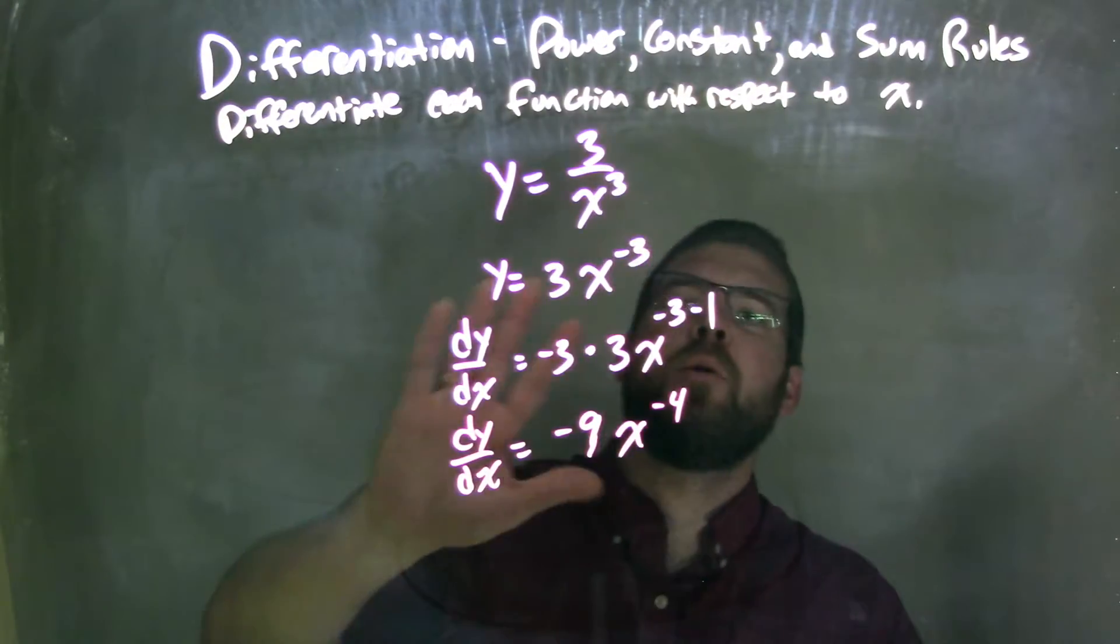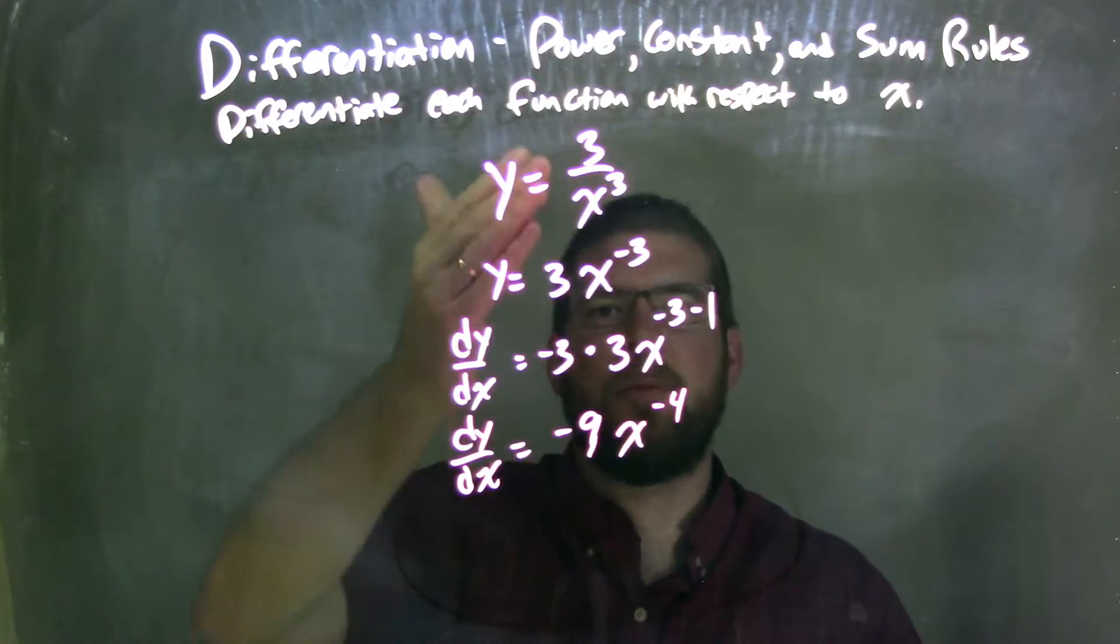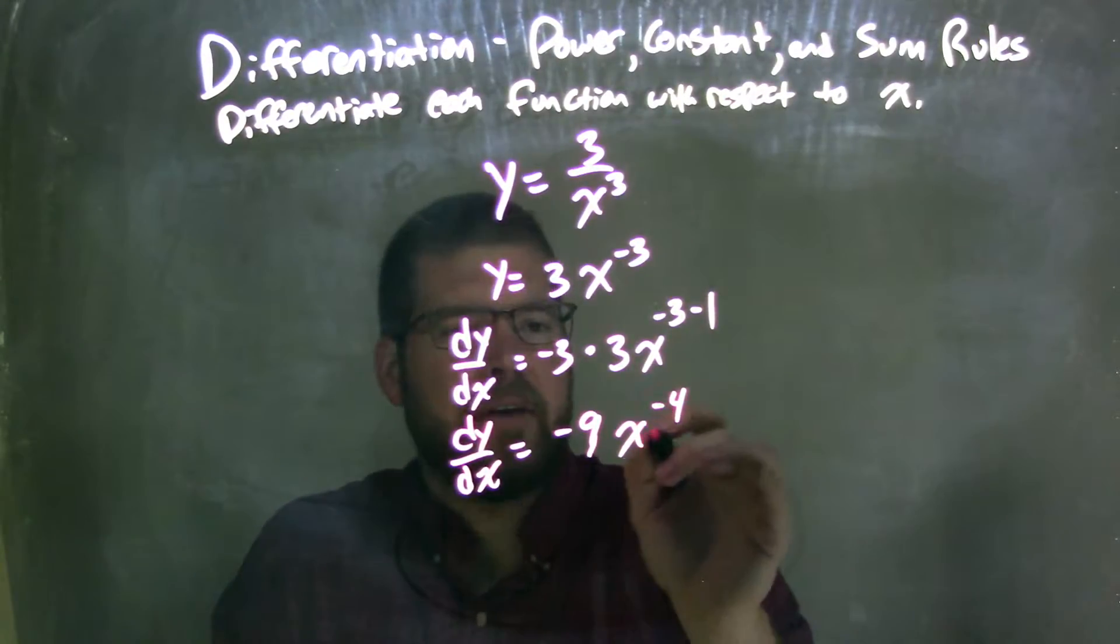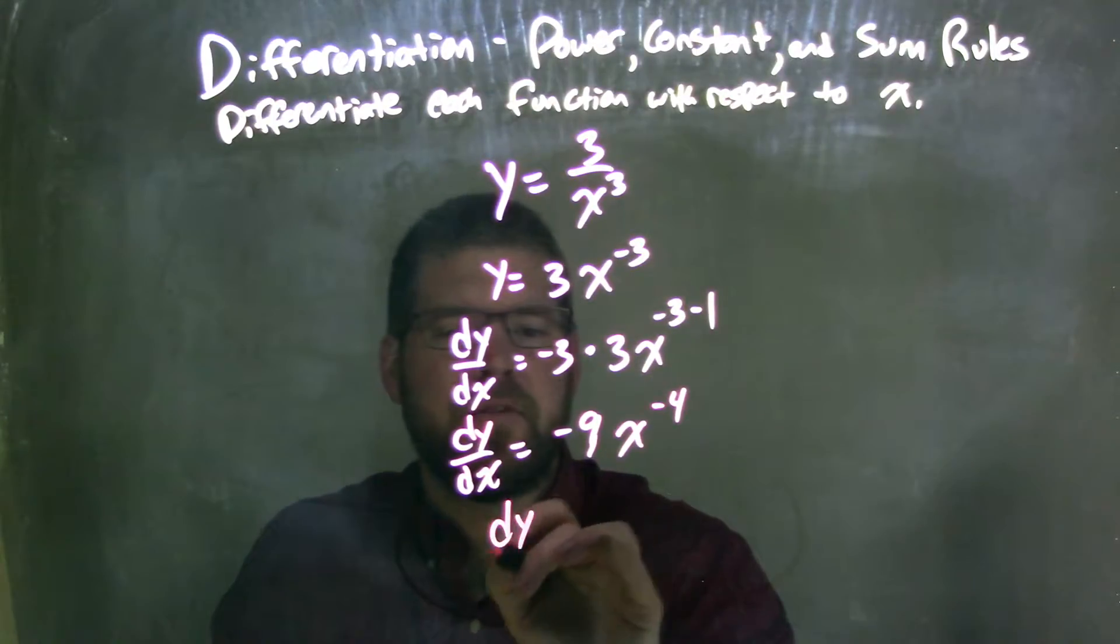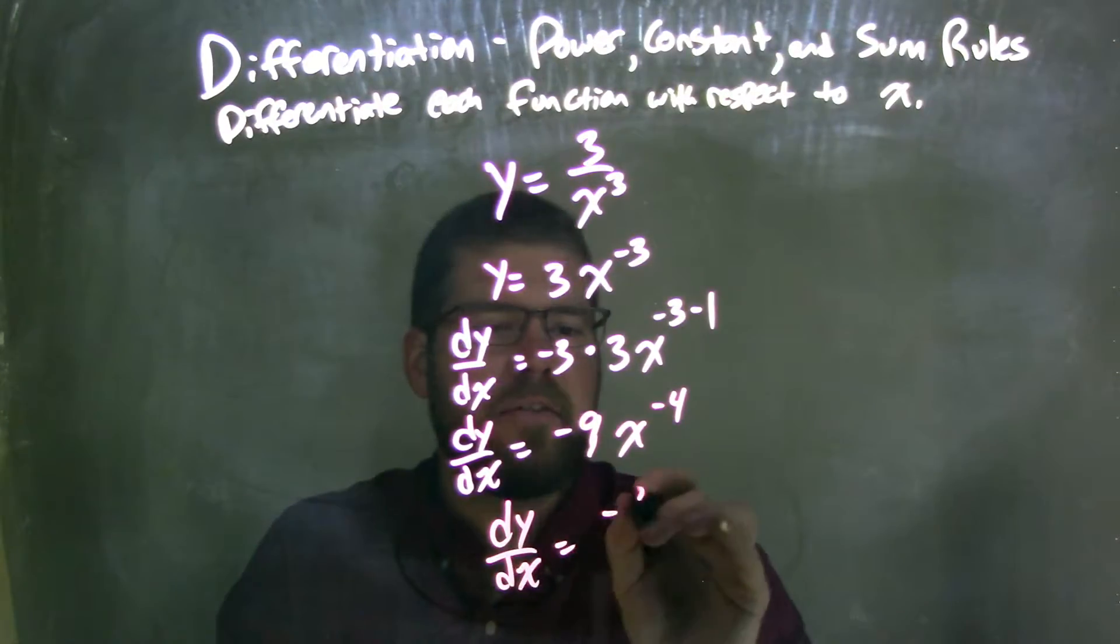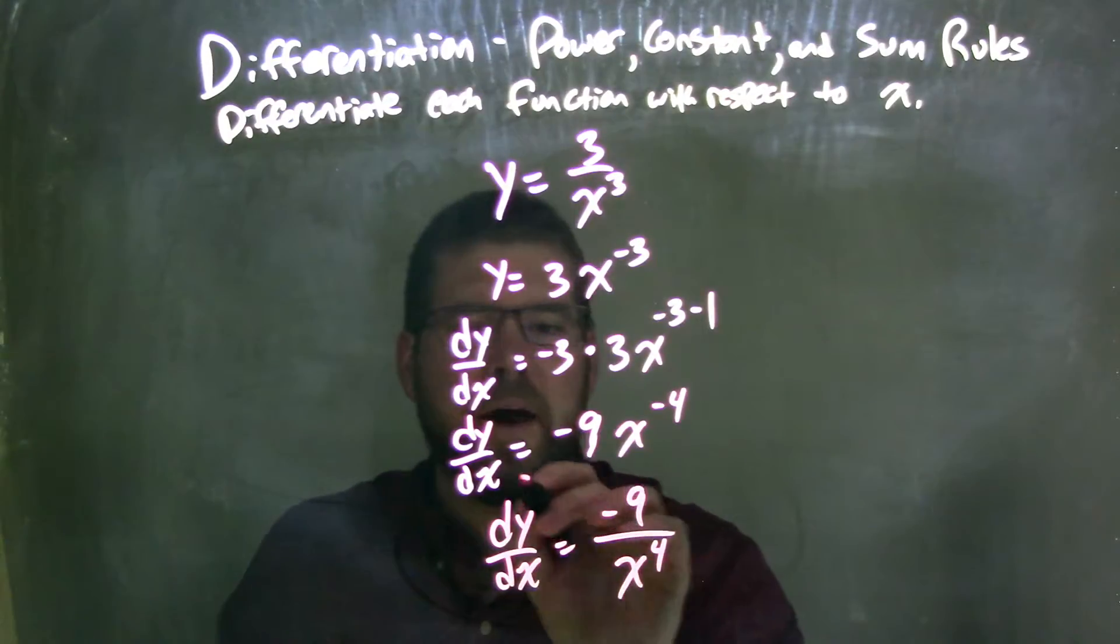Now, again, I would then rewrite it to have a positive exponent. So bring the x to the negative 4th. I put that in the denominator, make x to the positive 4th. So our final answer is dy/dx is negative 9 over x to the positive 4th power.